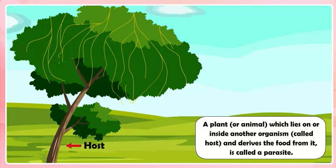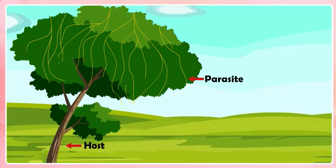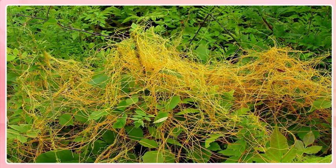An organism called a host, and the plant that derives food from it is called a parasite. An example of a parasite plant is the Cuscuta. A Cuscuta plant does not have chlorophyll — we can see from the picture it is yellow in color — therefore it cannot synthesize its own food. It takes ready-made food from the tree or plant on which it climbs.